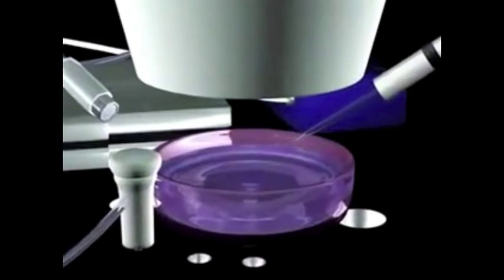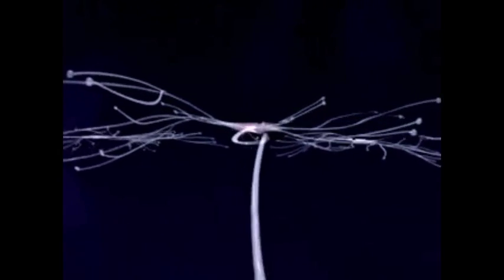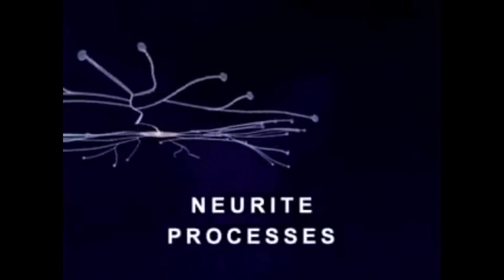To better understand mercury's effect on the brain, let us first illustrate what brain neurons look like and how they grow. In this animation, we see three brain neurons growing in a tissue culture, each with a central cell body and numerous neurite processes.